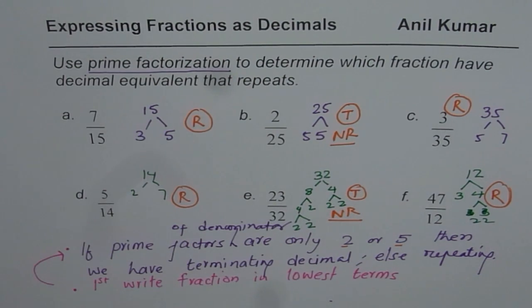A fraction in lowest terms which has only 2 and 5 as factors of denominator will result in terminating decimal, otherwise it will be a repeating decimal. That is the rule.